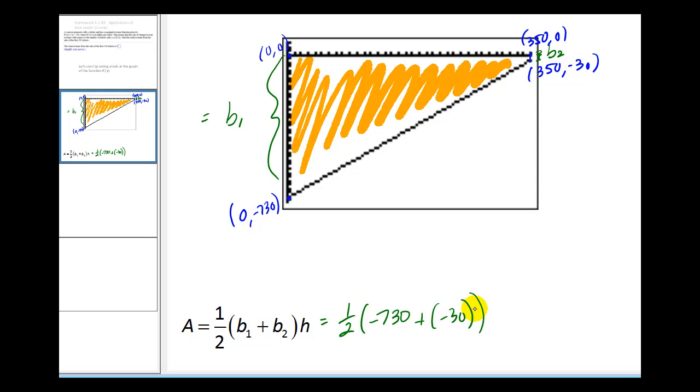And then times the height. Now, this trapezoid is turned on its side. This here would be the height, which has a length of positive 350.